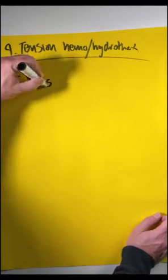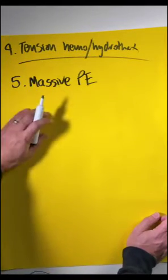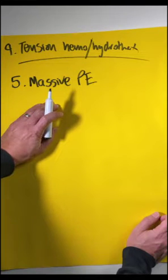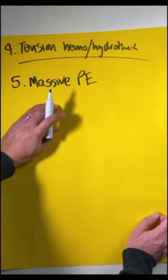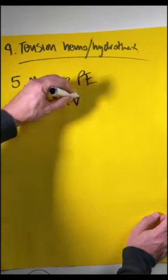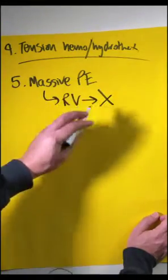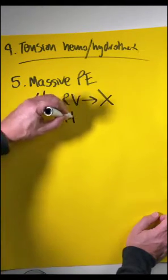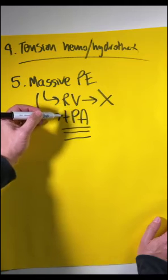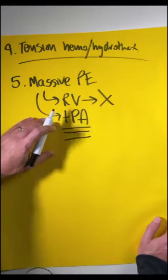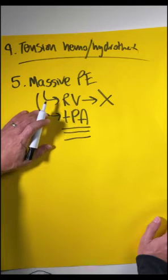Number five is a massive PE. If a big blood clot goes from the lower extremities and lodges itself in the main pulmonary artery or in one of the branches such that there is an obstruction to right ventricular flow, this is going to lead to a decreased filling of the left ventricle. These patients need immediate thrombolysis. If this obstructive clot is not quickly dealt with, the RV is not going to be able to handle that pressure overload and is going to go into failure.